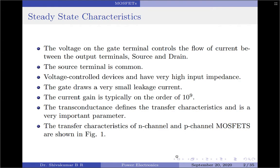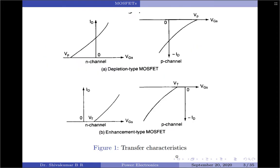The transfer characteristics of the N-channel and P-channel MOSFETs for both depletion and enhancement type are shown in the figure here. It should be noted that the gate-to-source voltage at which the MOSFET triggers is denoted using two different notations based upon whether it is an enhancement type or a depletion type MOSFET. For depletion type MOSFET, it is denoted by pinch-off voltage VP. For N-channel depletion type MOSFET, the pinch-off voltage is negative and the current is positive.